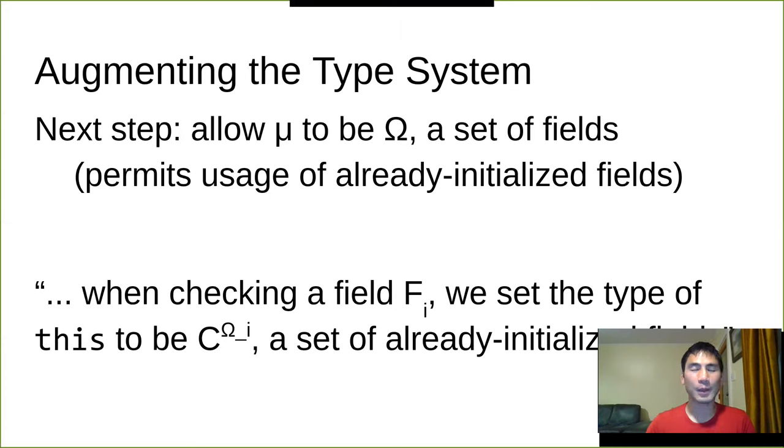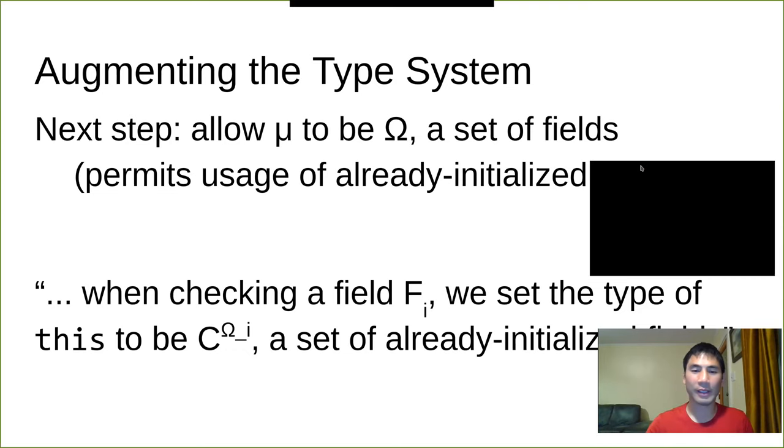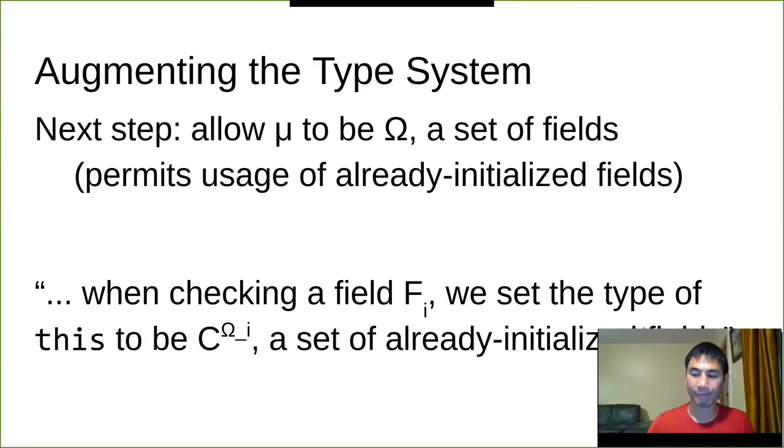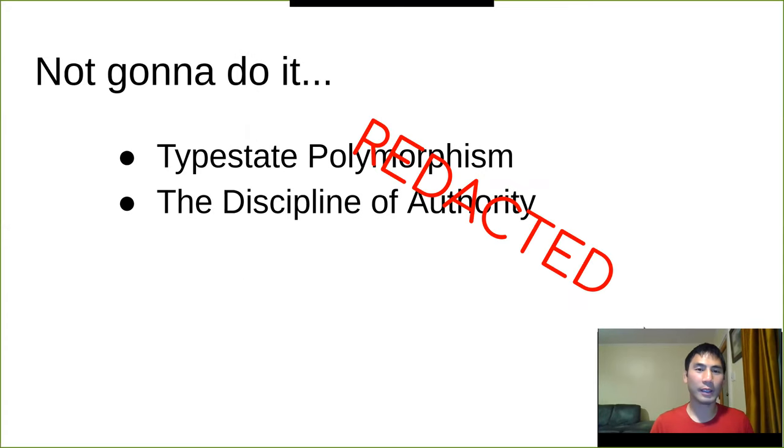That's the simple type system. And the authors also augmented it. We had types before which were either cold, warm or hot. And they point out, you also have to be able to permit usage of already initialized fields. So they allow mu to be omega, which is a set of fields. And so when you're type checking a field F, you set the type of this to be C omega I, which is a set of already initialized fields. There's also more discussion on type state polymorphism and the discipline of authority, things that we're not going to talk about here.